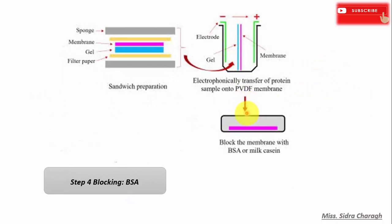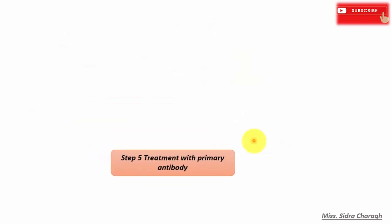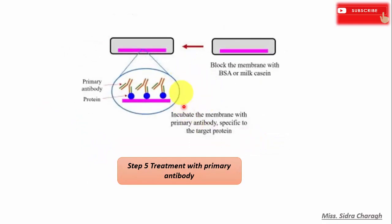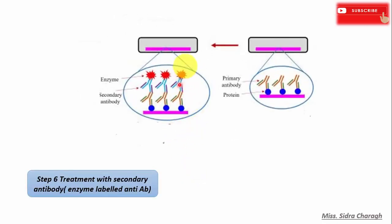When electric current is passed through the gel, it causes transfer of proteins from the gel to the membrane. Then we perform blocking, which is a very important step in Western blotting. Since antibodies are also proteins, they are likely to bind non-specifically to the nitrocellulose membrane. Before adding the primary antibody, the membrane is non-specifically saturated by using casein or bovine serum albumin. After blocking, we treat the membrane with primary antibody that is specific to the desired protein, forming an antigen-antibody complex.